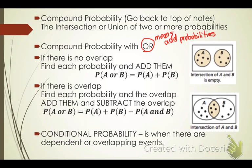Conditional probability is when there are dependent or overlapping events. So if you hear 'conditional probability,' they're talking about the probability with the overlap.